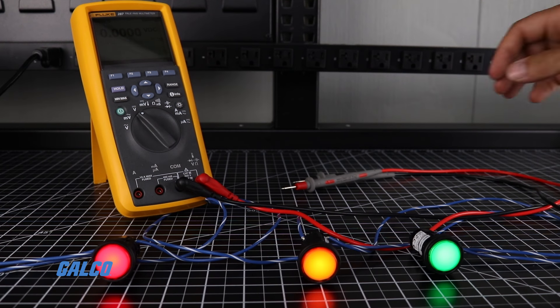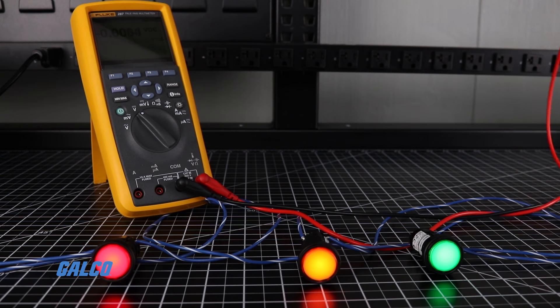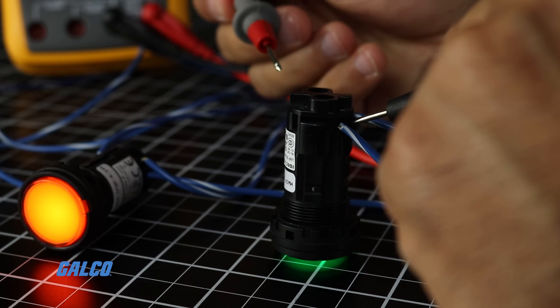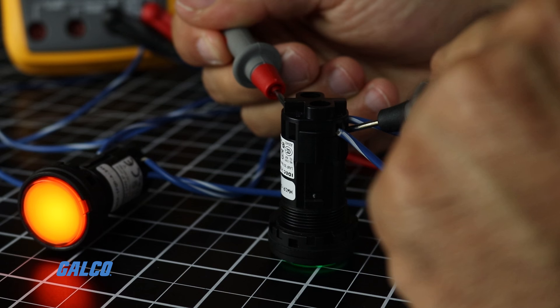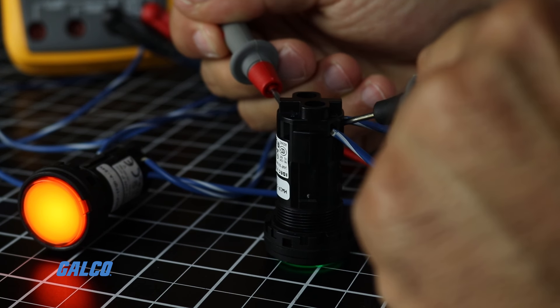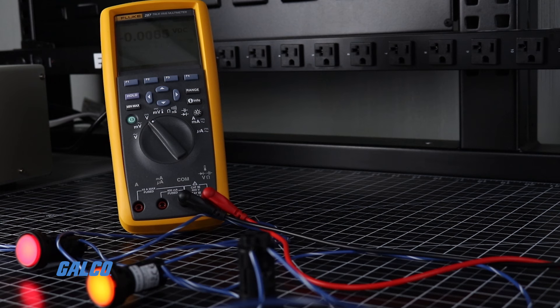Now connect the leads to the circuit in a parallel arrangement. The black lead should link to a point that is negative or grounded. The red lead should be touched to a point of the circuit that you would like to measure.